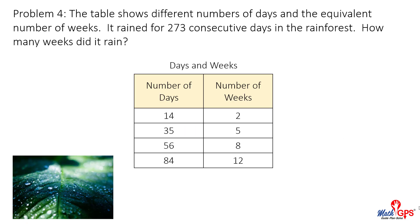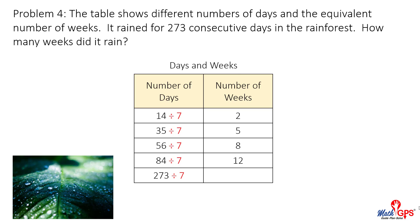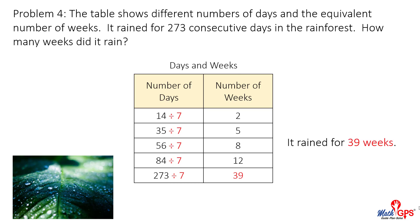Problem 4: The table shows different numbers of days and the equivalent number of weeks. It rained for 273 consecutive days in a rainforest. How many weeks did it rain? Look at the table. What is the process? Divide by 7. What is 273 divided by 7? 273 divided by 7 equals 39. It rained for 39 weeks.